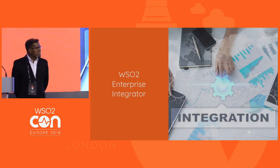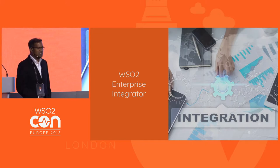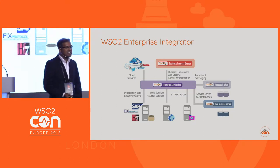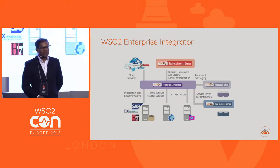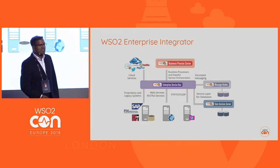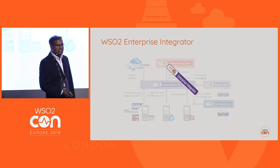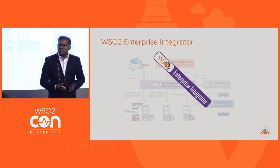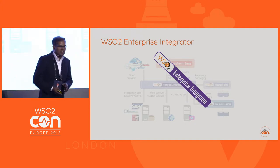Those are some of the requirements in a brownfield integration project. So let's look at the functionality provided by the WSO2 Enterprise Integrator. Before 2017, at the center we had the Enterprise Service Bus product, the Message Broker product for messaging, the Data Services product for data integration, and the Business Process Server for stateful long-running integrations. What we realized is that customers implementing an integration project need more than one of these products. Therefore we repackaged all these products into a product called the Enterprise Integrator.